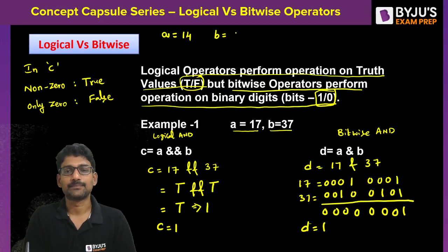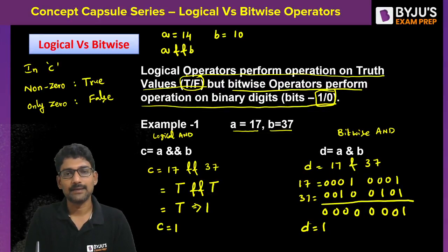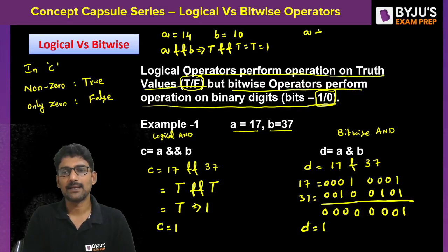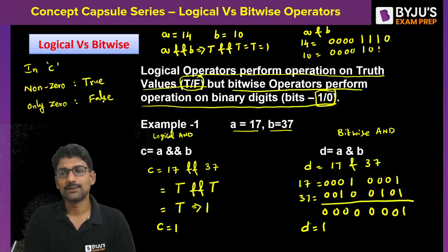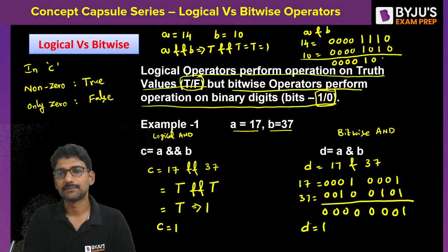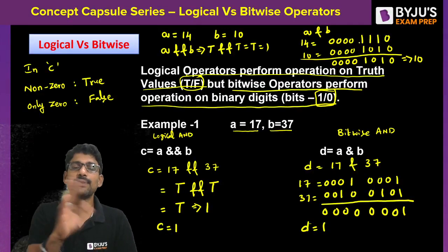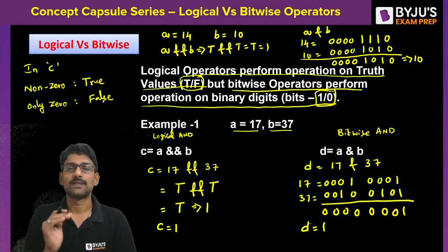Performing bitwise AND bit-by-bit on 00010001 and 00100101 gives 00000001, which equals 1. So the logical AND result and the bitwise AND result can differ. Every time you do not get the same result from logical AND and bitwise AND because the mode of operation is different.